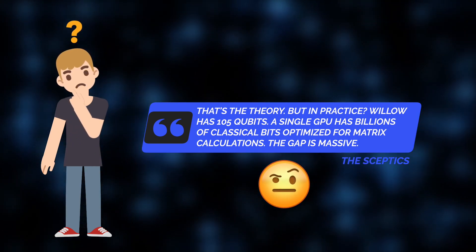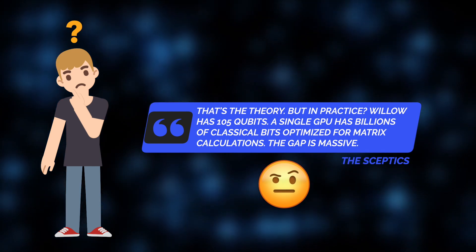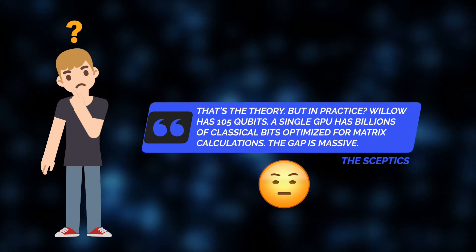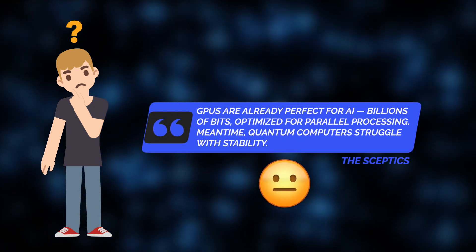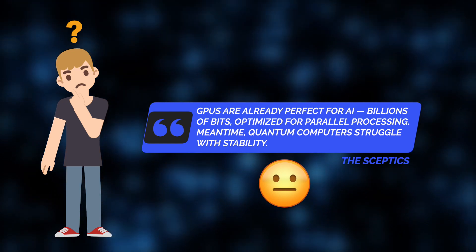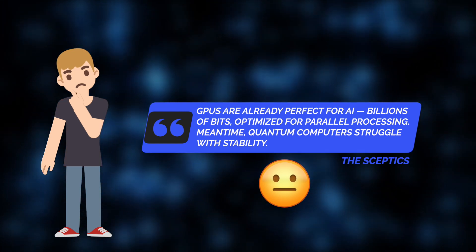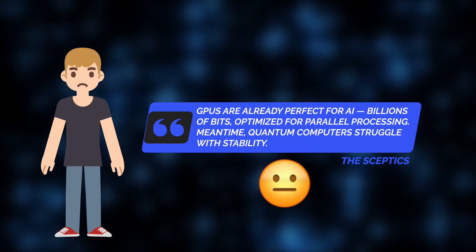Comparing 105 Willow's qubits to billions of classical bits of a single GPU optimized for matrix calculations. Plus, they stated GPUs are already optimized for AI, managing billions of bits in parallel. In contrast, quantum computers will struggle with stability. So, it's doubtful that quantum computing will revolutionize AI anytime soon.